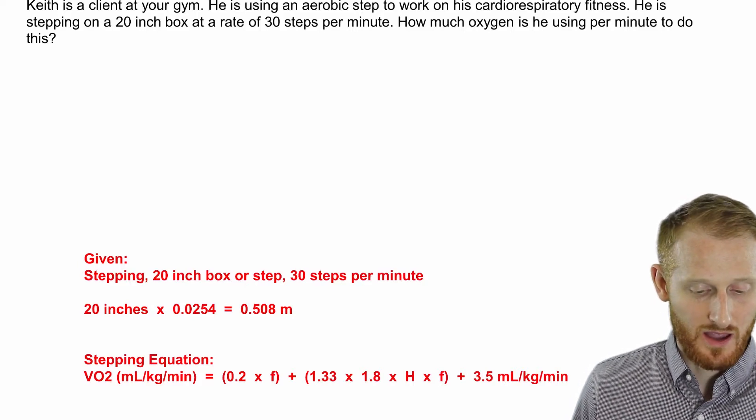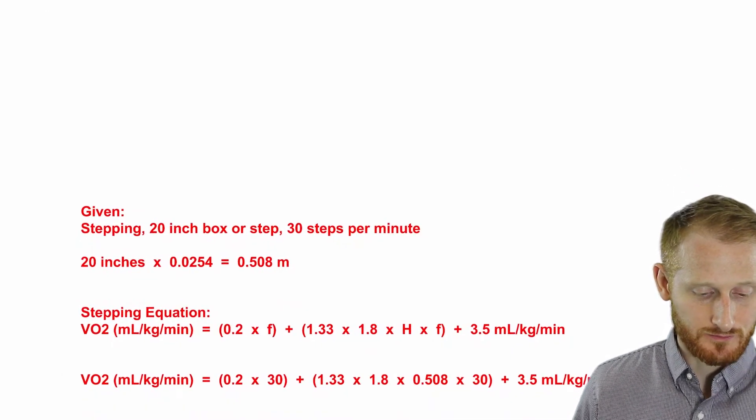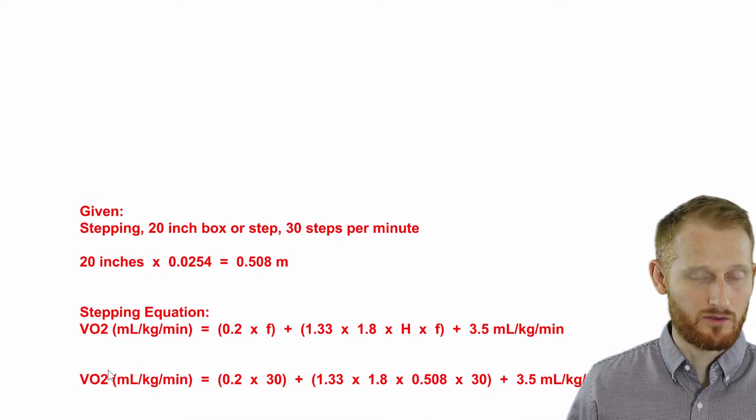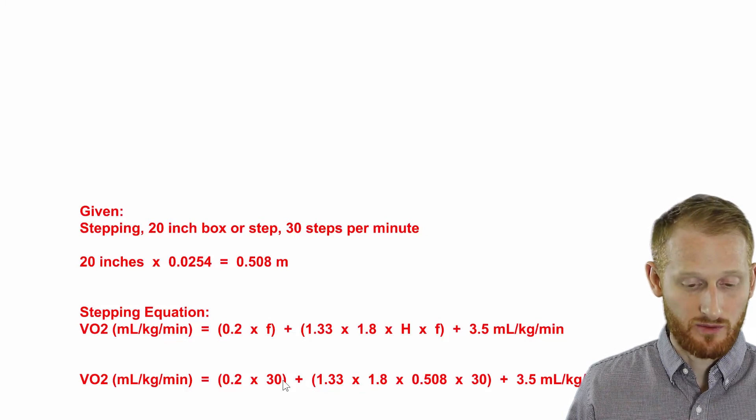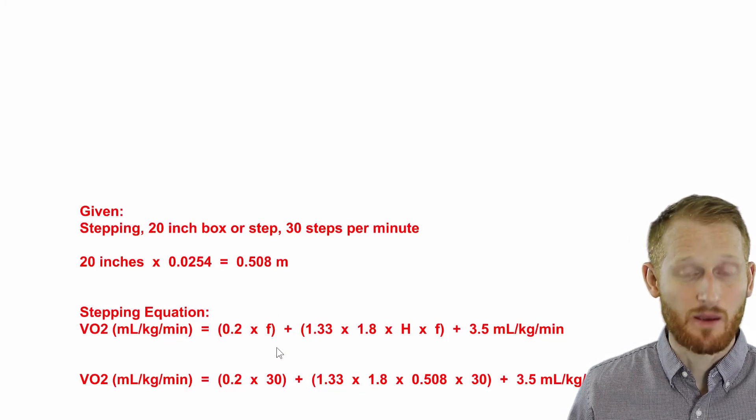All right, let's go ahead and plug in our values. So we have the relative VO2 equals 0.2 times 30 for the step frequency, so because they're doing 30 steps per minute.